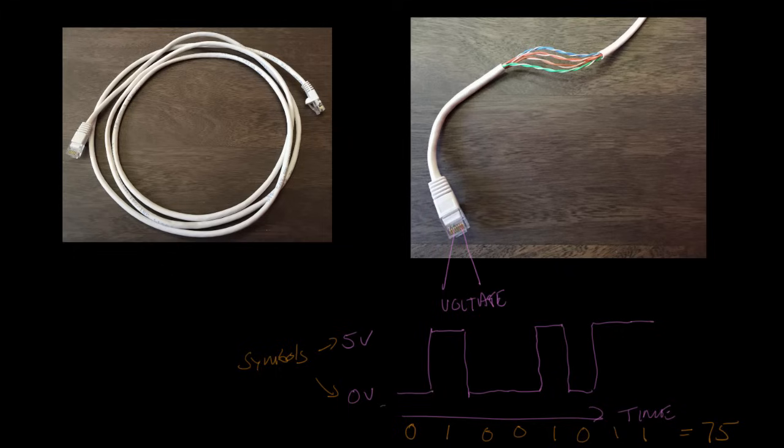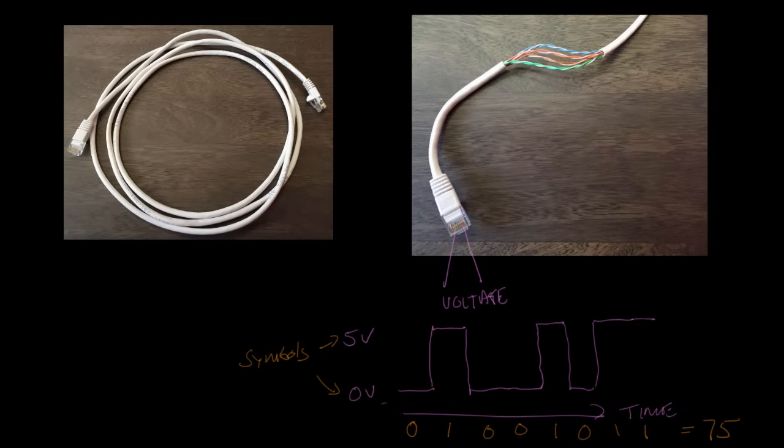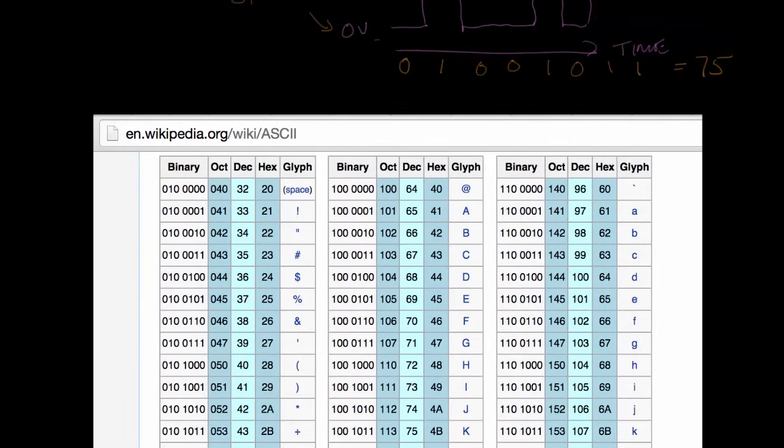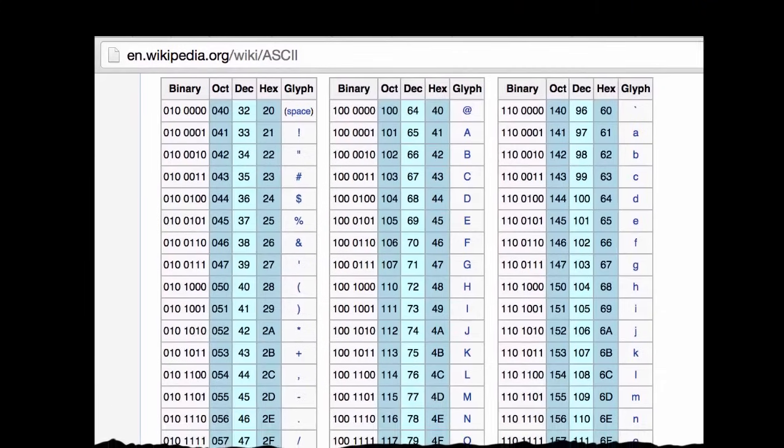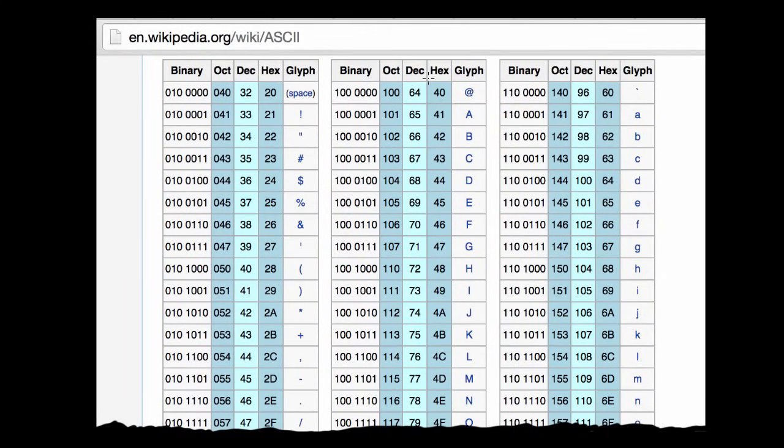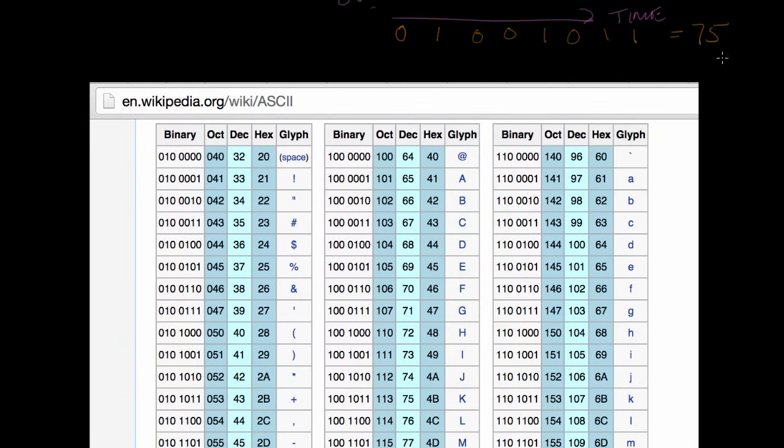And so one of the most common agreed upon mappings is ASCII. And I got this from Wikipedia as just an example of what ASCII looks like. It's just this table that maps between numbers and they call it glyph, but it's basically just a character or a letter of some sort. So for example, this 75 that we had up here maps to, in ASCII, 75 decimal maps to the letter K.